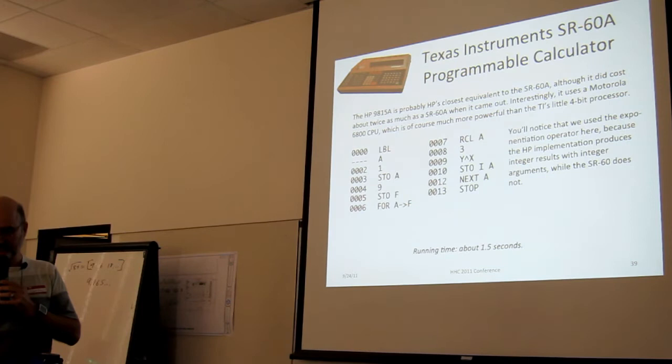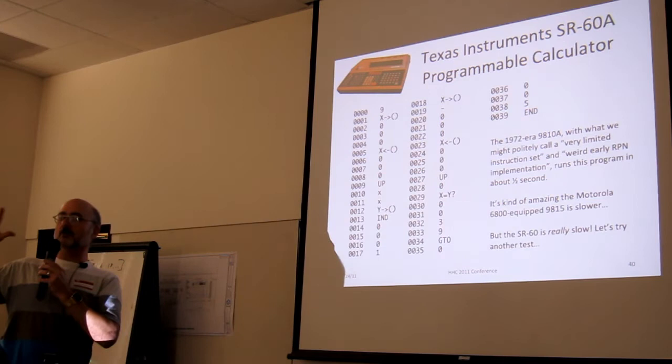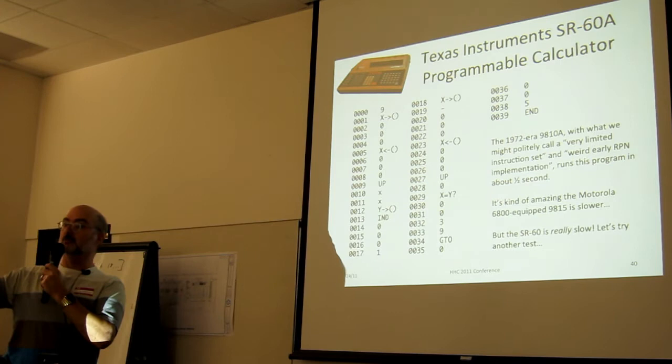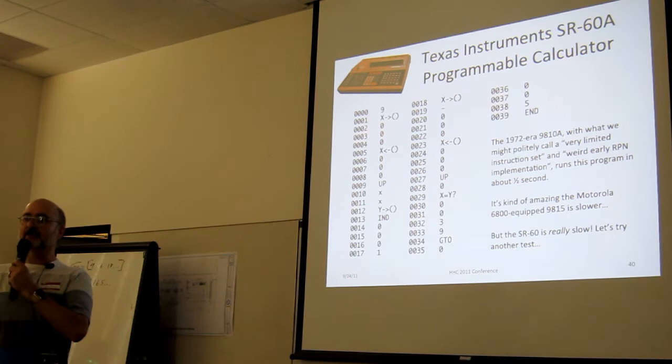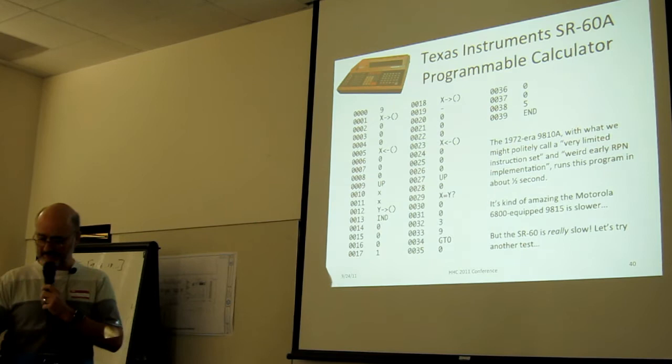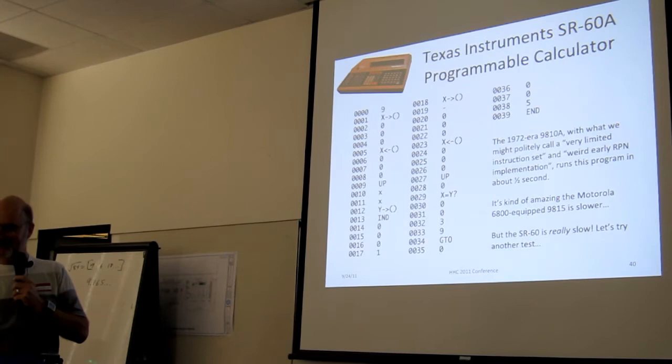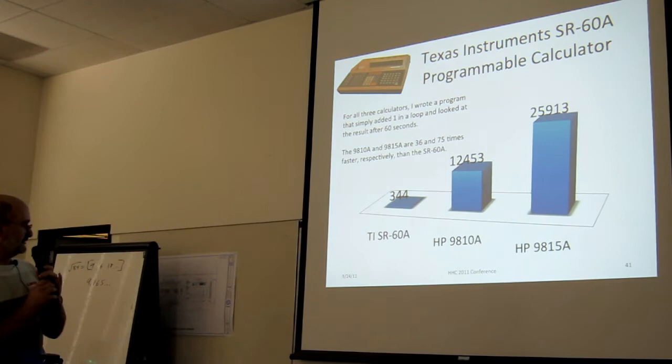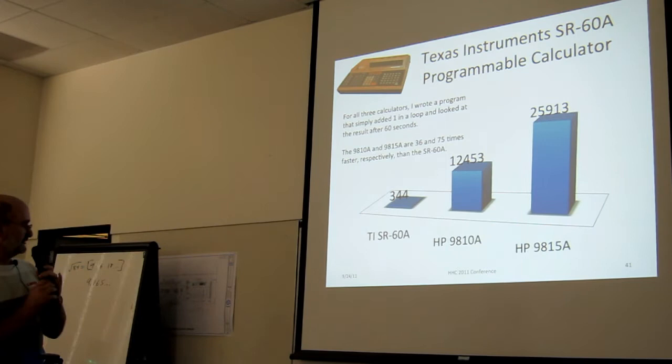So I was telling Gene this and he said, oh Dave, what you have to do is write a program that does nothing but add one in a loop, and run it for 60 seconds and see how far it gets. Well that's how I benchmark all my programs. But you know I'm nervous about giving a TI presentation to you guys anyway. Here are the results: SR 60 gets to 344 after a minute of adding one in a loop. The 9810 gets to 12,453 and the 9815 gets to 25,913. Wow.